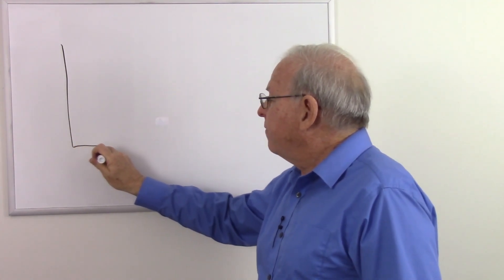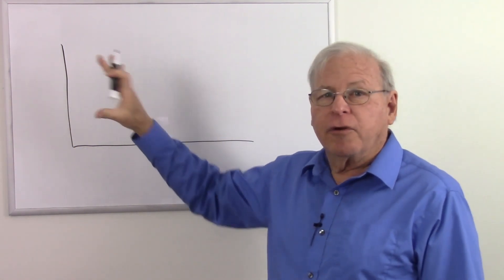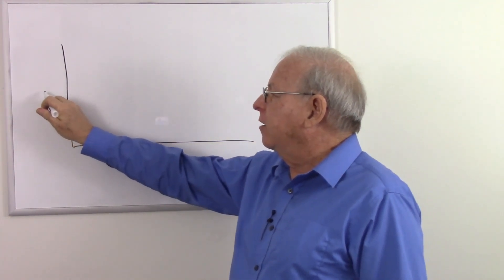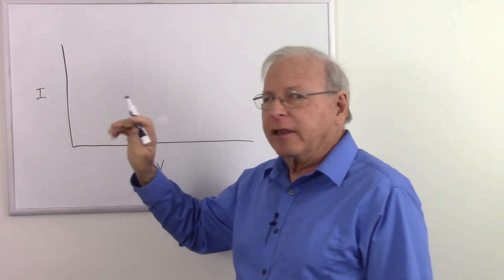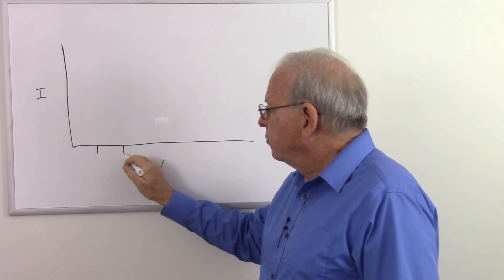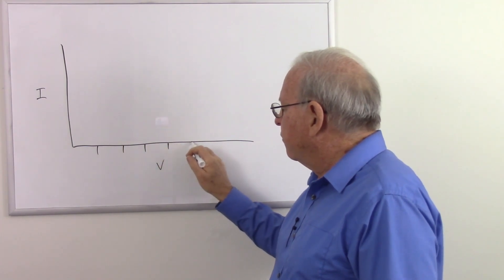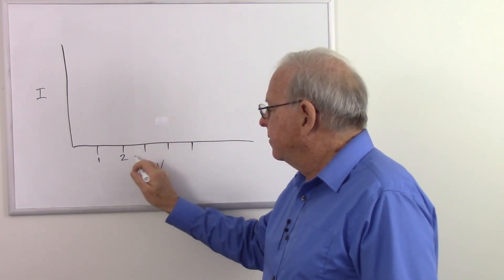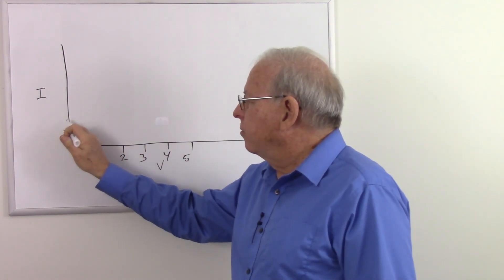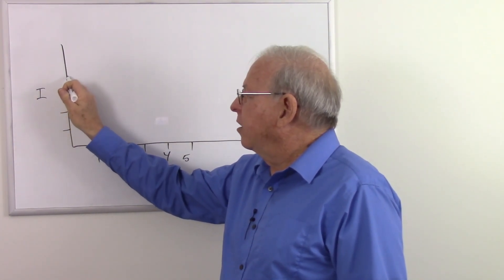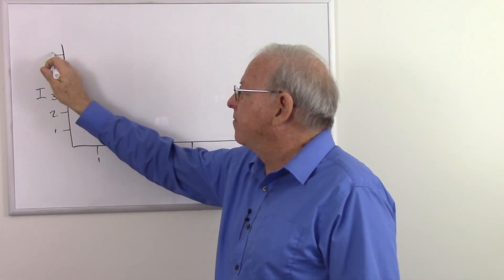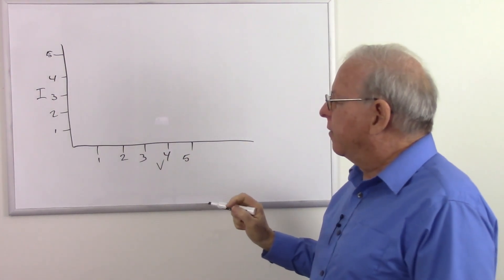Let's draw a graph of the voltage and current relationship of a resistor. Here's our voltage on the horizontal scale and our current on the vertical scale. Let's make this some nice easy numbers: 1 volt, 2 volts, 3 volts, 4 volts, 5 volts, etc. And over here we'll do increments of single amps: 1, 2, 3, 4, and 5 up here because we have 5 volts.